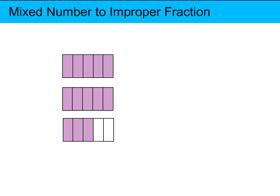The amount you see here can be represented as a mixed number. The number of whole parts, which is 2, plus the number of fractional parts, which is 3 fifths. So it could be represented by the mixed number 2 and 3 fifths.